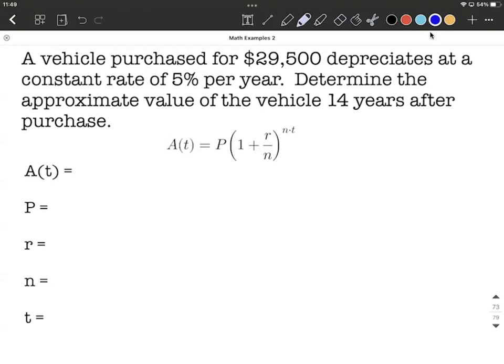So going through here, we have purchased this for $29,500. Well, that's the initial value, what you start with, basically. Sometimes in banking problems like this, we call it the principle. It's going to be filled in for P, so $29,500.